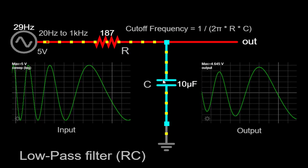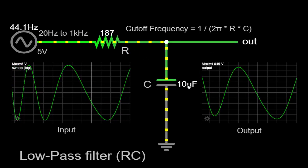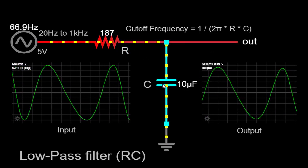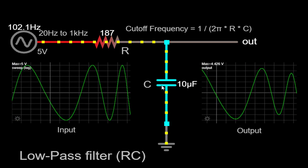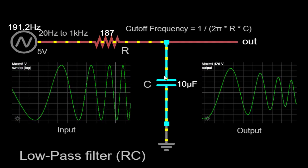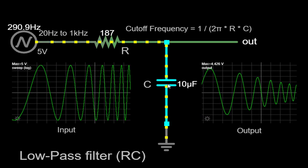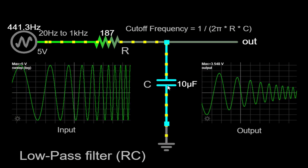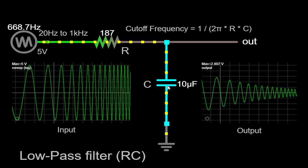On the other hand, the capacitor, with its capacitance of 10 microfarads, is a reactive component that can store and release electrical charge. When an alternating current (AC) signal is applied to the input of the RC circuit, it encounters the resistor and capacitor.